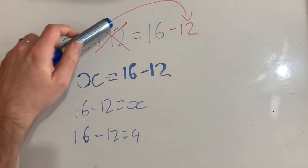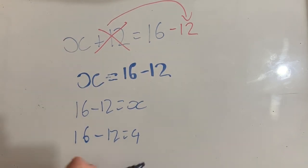So now I know that x, our missing value, is 4. Fantastic.